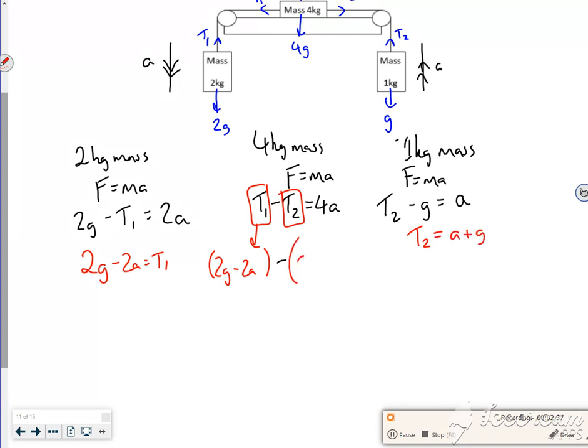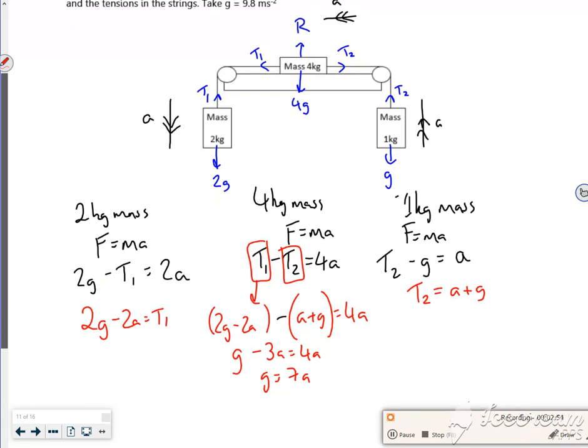That's minus a plus g is equal to 4a. So I've got 2g minus g is g. I've got minus 2a minus an a is minus 3a. That's equal to 4a. So I've got g is 7a.